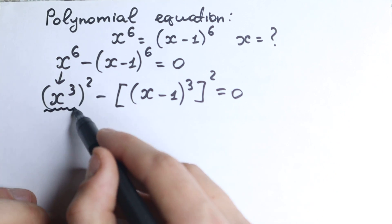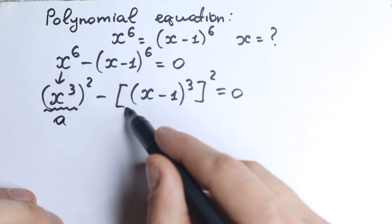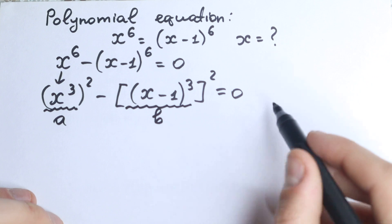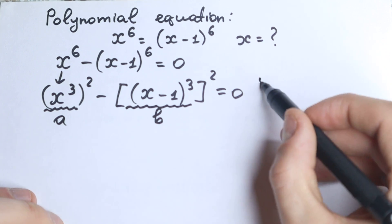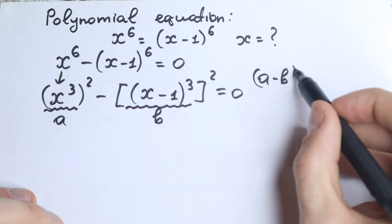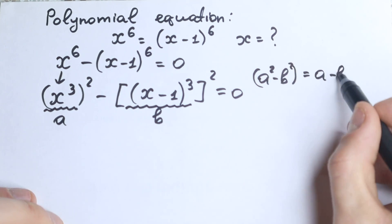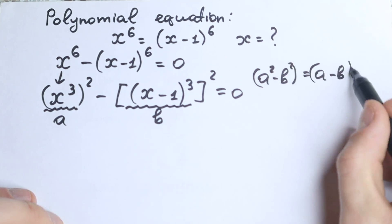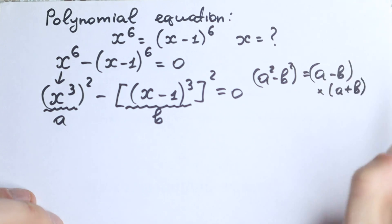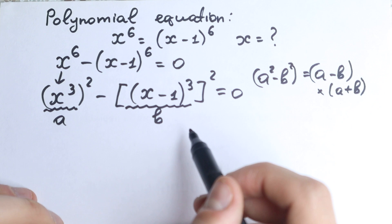We can imagine the first element as a equals x cubed and the second element as b equals (x minus one) cubed. Using the identity formula: a squared minus b squared equals (a minus b) times (a plus b).